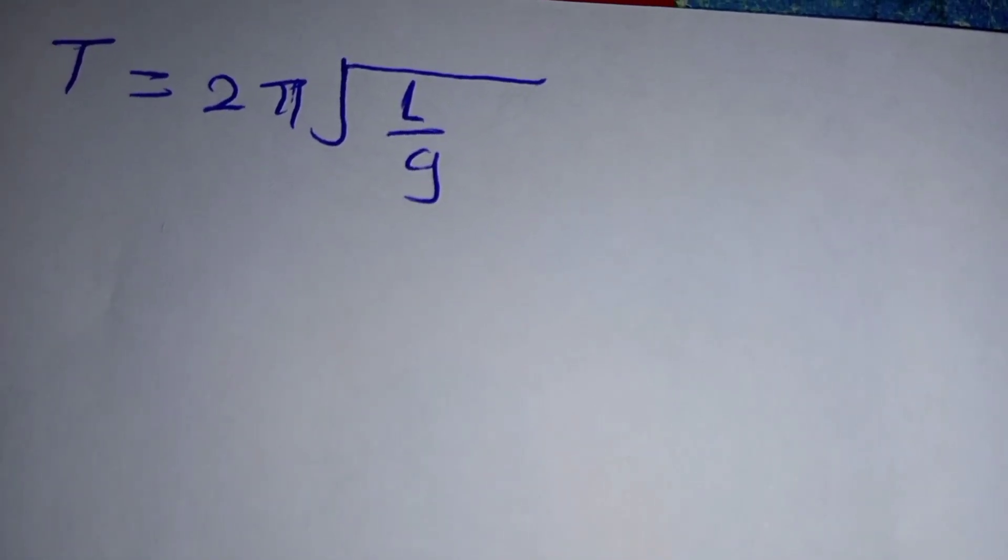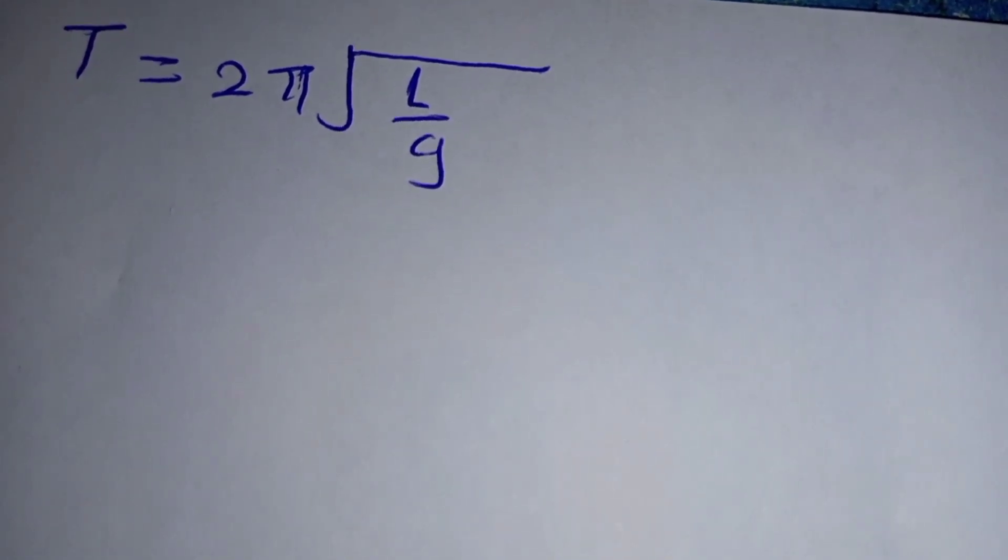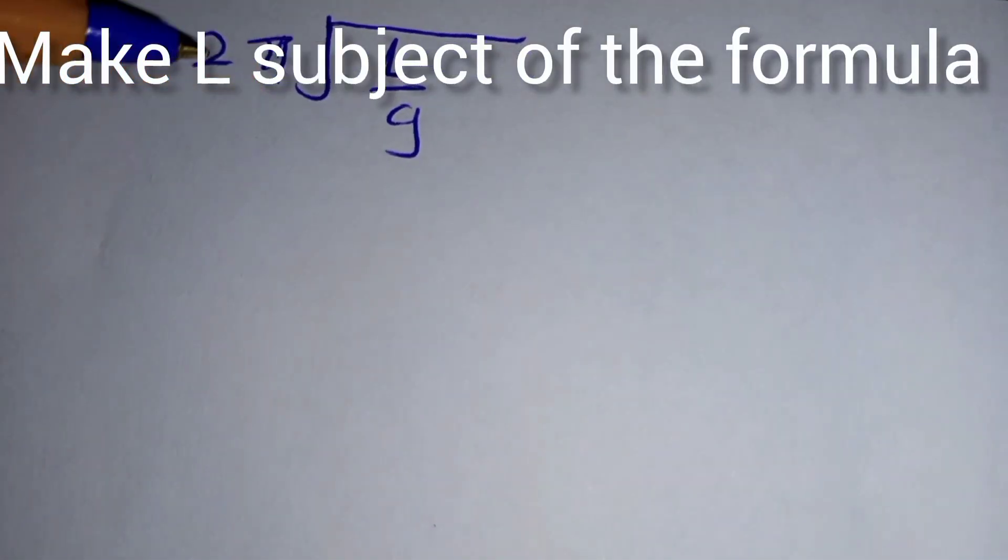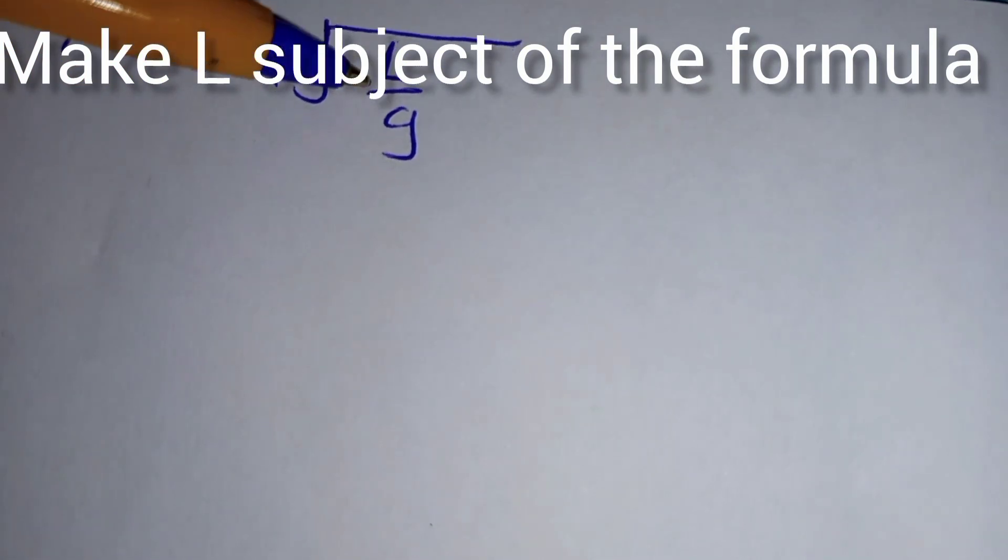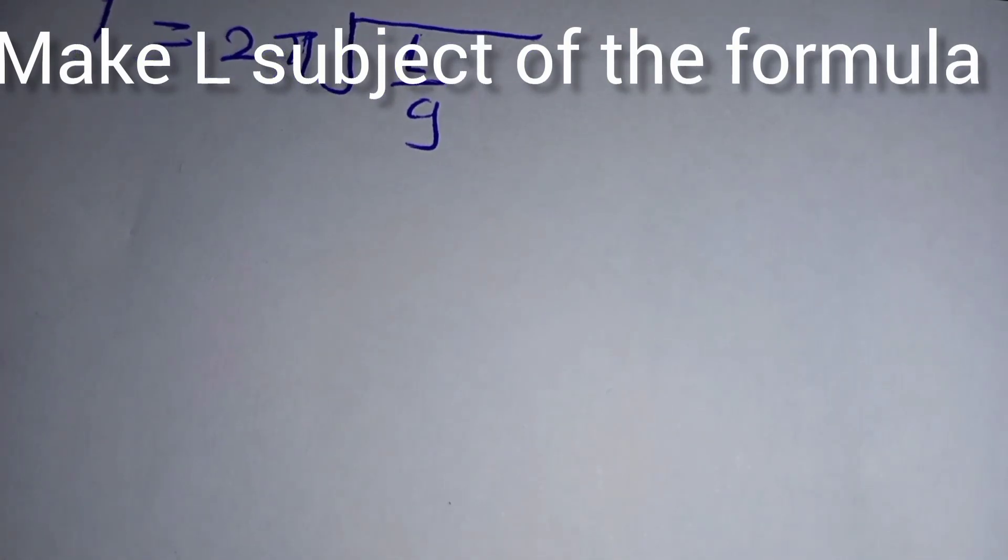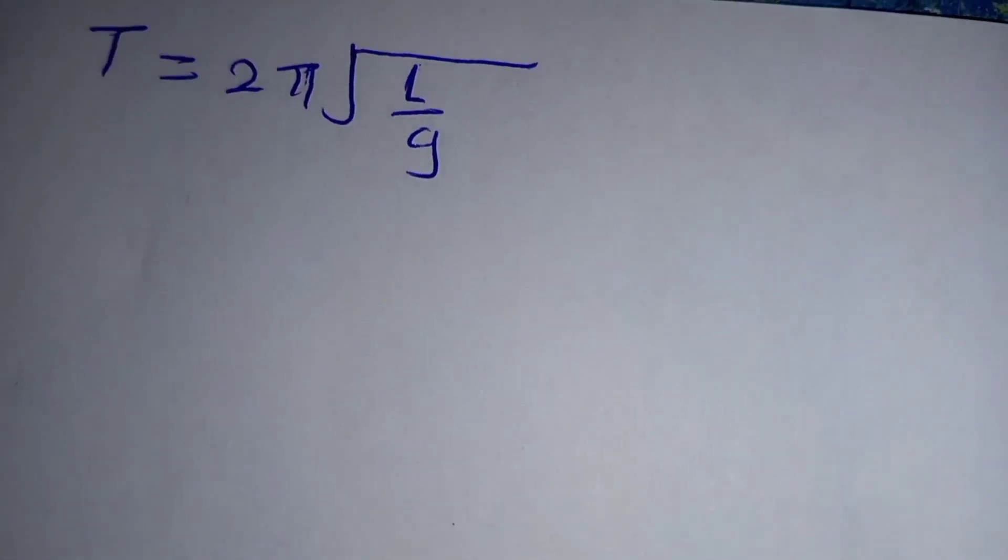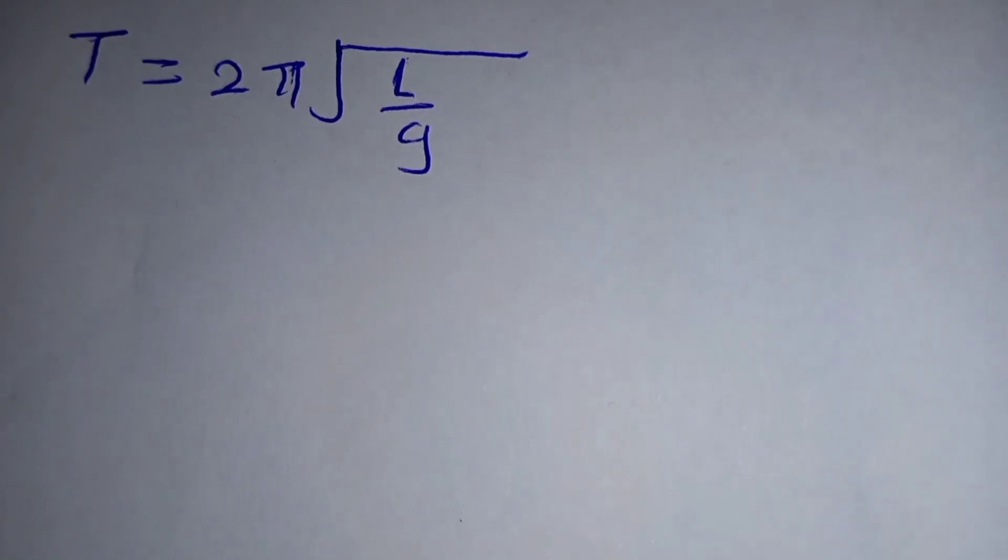You are given that the period of a pendulum is given by the formula T = 2π√(L/g). You have to make L the subject of the formula and also obtain the value of L when we are given other constants.